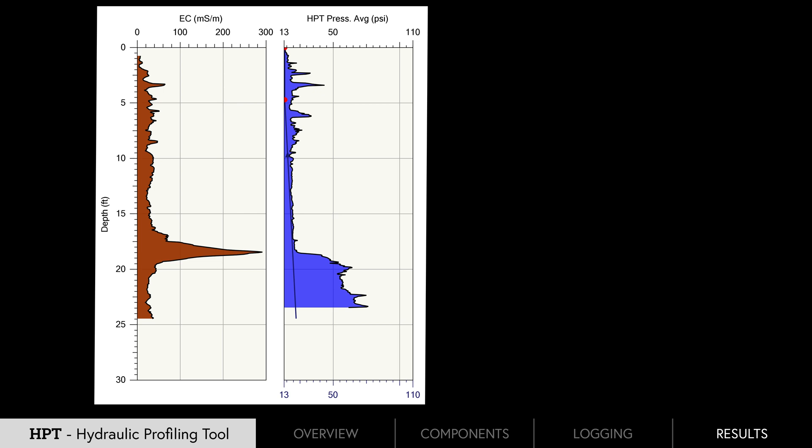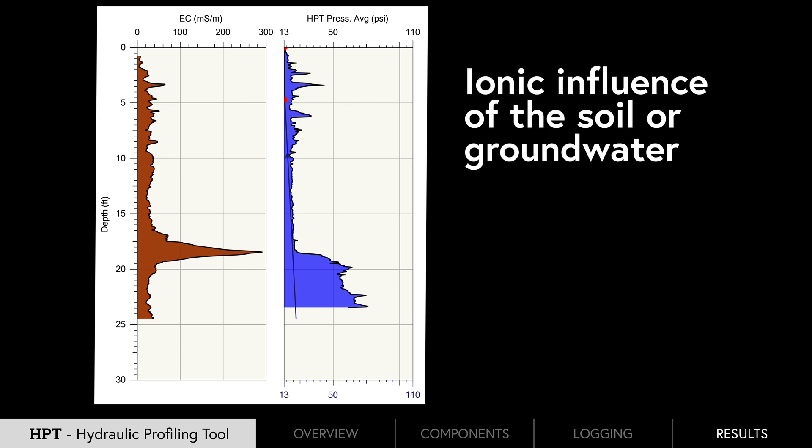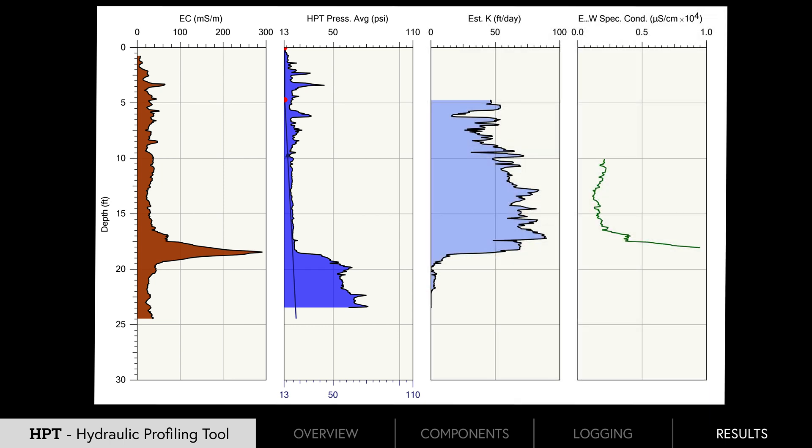Where we have cases of high EC and lower HPT pressure typically is due to an ionic influence in the soil or groundwater. This log shows an ionic impact from an upgraded remediation fluid injection in a permeable formation on top of a silt clay unit.